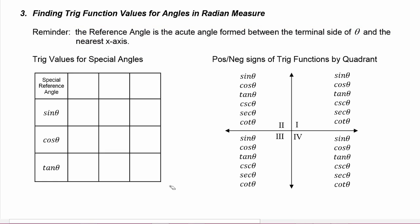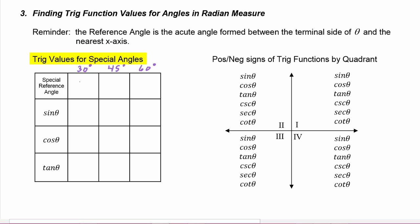To find trig function values, we're going to need a couple of charts that we've made earlier. The first is the chart for the trig values for the special angles. In previous sections we were using degrees — 30, 45, and 60 degrees — but now we're thinking in terms of radian measure, so the special angles are π/6, π/4, and π/3.